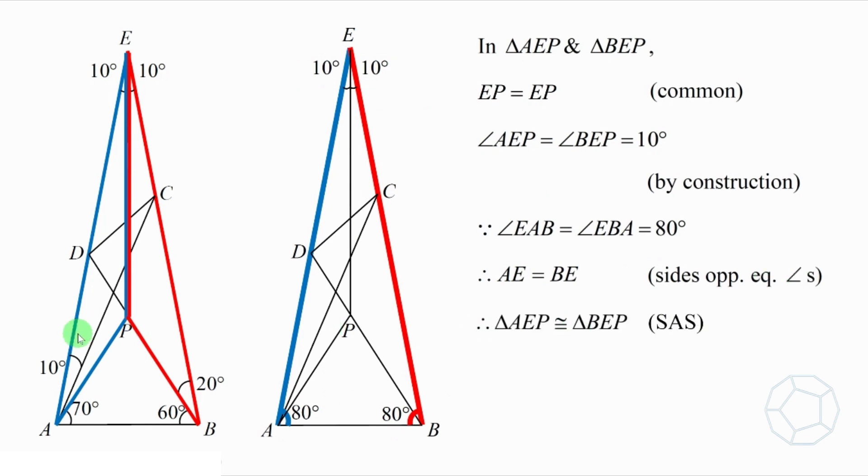All together, we'll have triangle AEP and triangle BEP congruent to each other, and the reason is SAS.